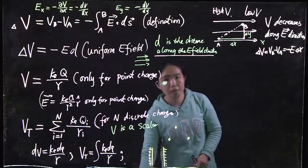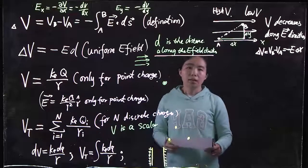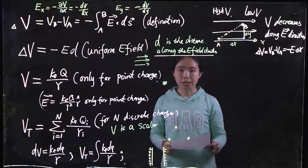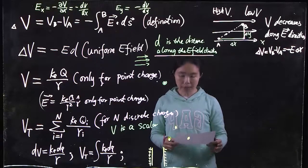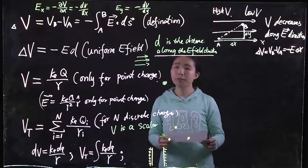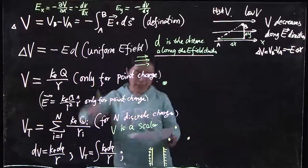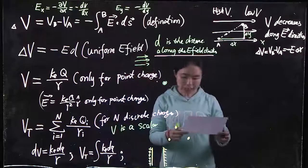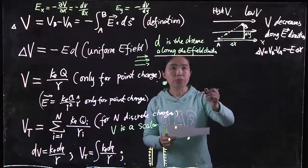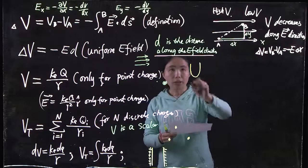This topic is about potential energy — electrical potential energy. It's different from potential. Potential is V, potential energy is U, and U is defined by the following.